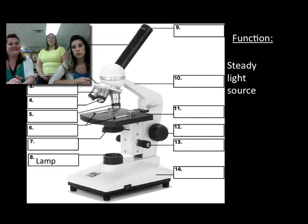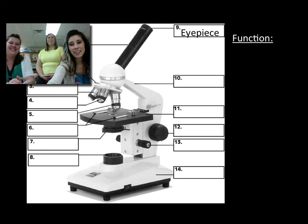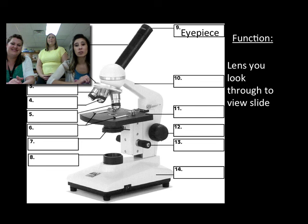The lamp - you've got to have it to see the organism, so turn it on. Number nine is the eyepiece. This is where you actually put your eye and look through to see your microscope slide.